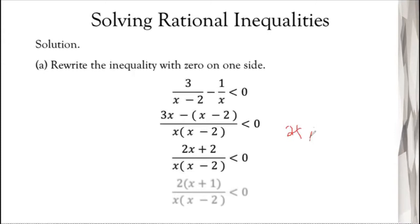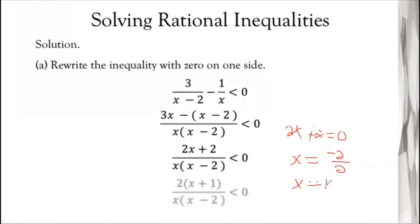Starting with the numerator: set 2x + 2 equal to 0 to find where the expression equals zero, because we need that for the number line. Transposing gives x = -2/2, so x = -1. So one zero is x = -1. Since it's negative, on the number line it's on the left side of 0 — negative 1 is here, and 0 is here.